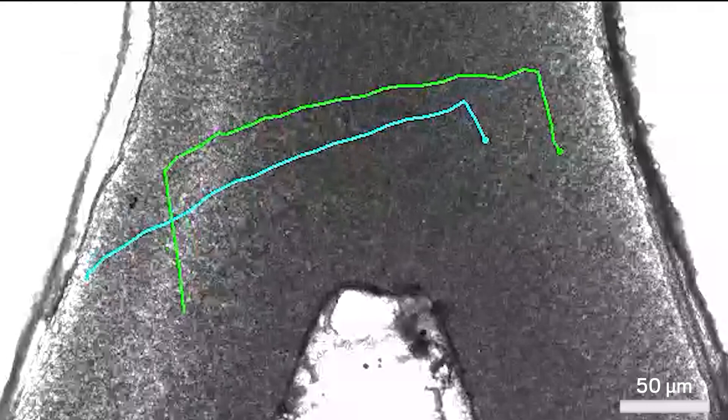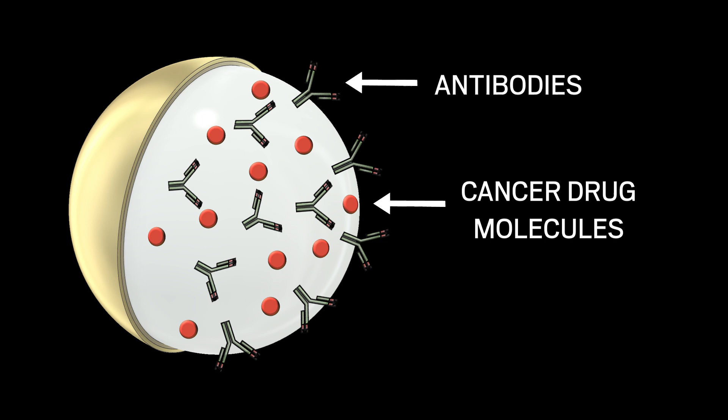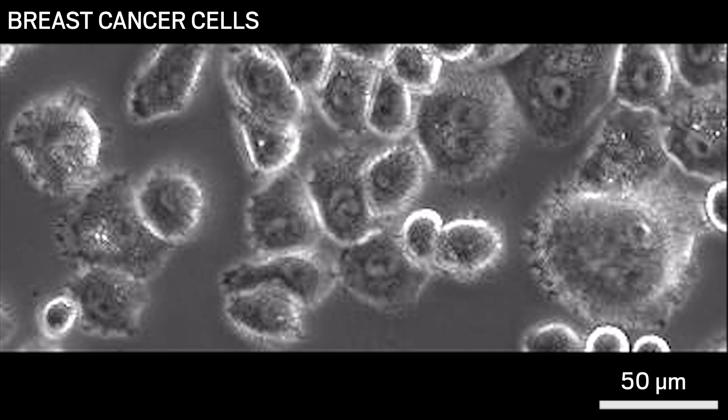The other face of the bots is critical for attacking tumors. This face is equipped with antibodies and cancer drug molecules. The antibodies bind to proteins found specifically on breast cancer cells. This allows the bots to stick to the tumor cells while passing by healthy skin cells, shown at the bottom of the screen.